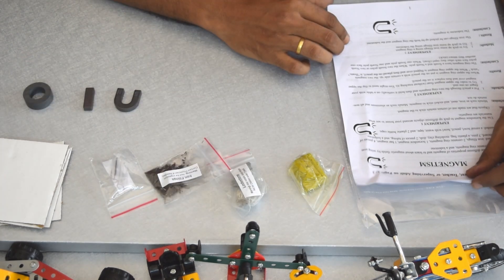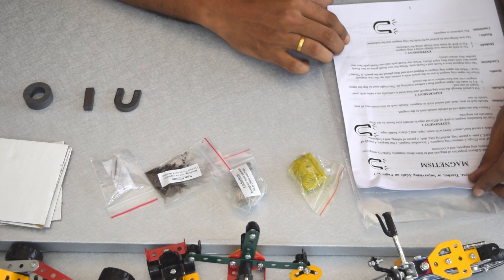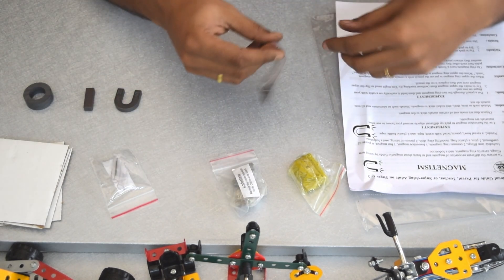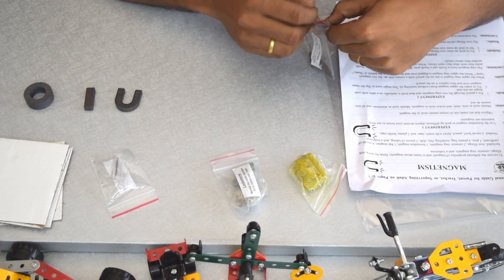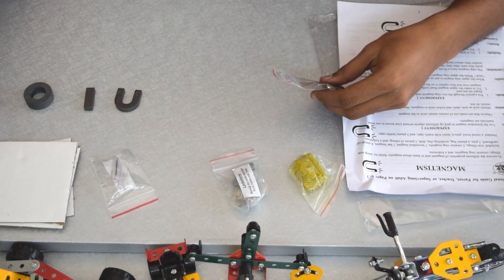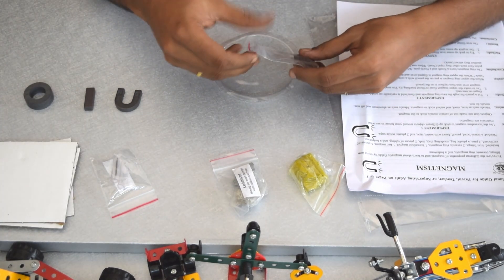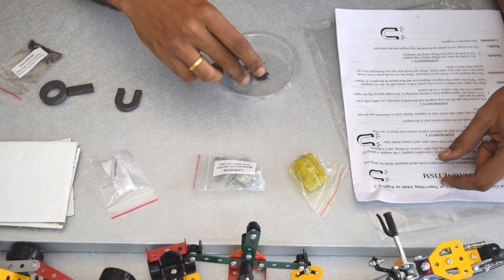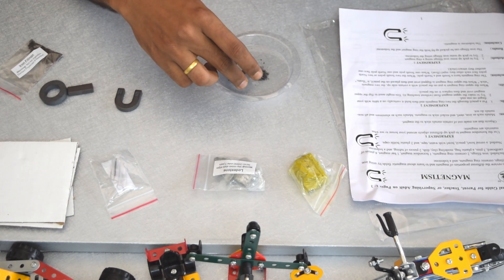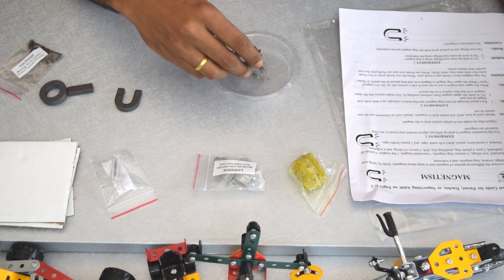Let's move to the third experiment. We are picking up some iron filings using a ring magnet. Let's use this plastic cup. It does stick to the magnet.